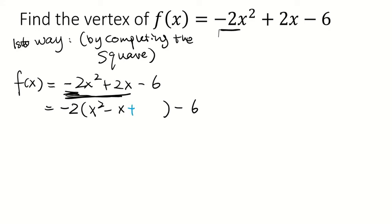So I'm going to add a term over here so that these three terms is a perfect square trinomial. So how do we find this number? We divide this coefficient, which is 1 by 2 and square it. So here we have 1 fourth.